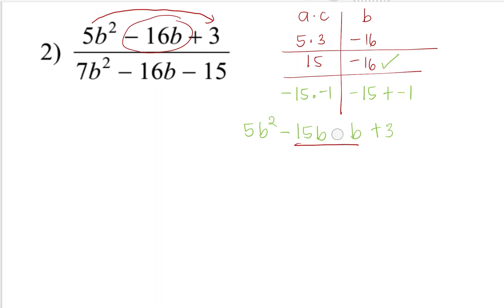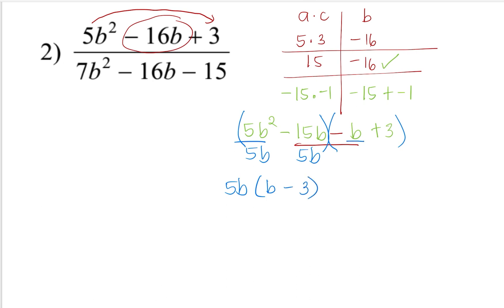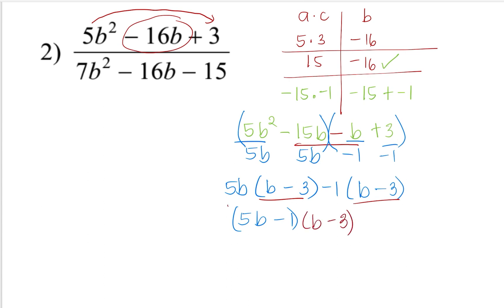So let's solve: 5B squared minus 15B minus B plus 3. We are using split the middle, literally splitting negative 16 into those two terms. Now, because we have four terms, we are going to factor by grouping. Group the first two terms and the third and fourth terms, then factor out the GCF. We have 5B, and we are left with B minus 3. Then factor out negative 1 for the second group, and we also get B minus 3. Our final factored form of the numerator is 5B minus 1 times B minus 3.